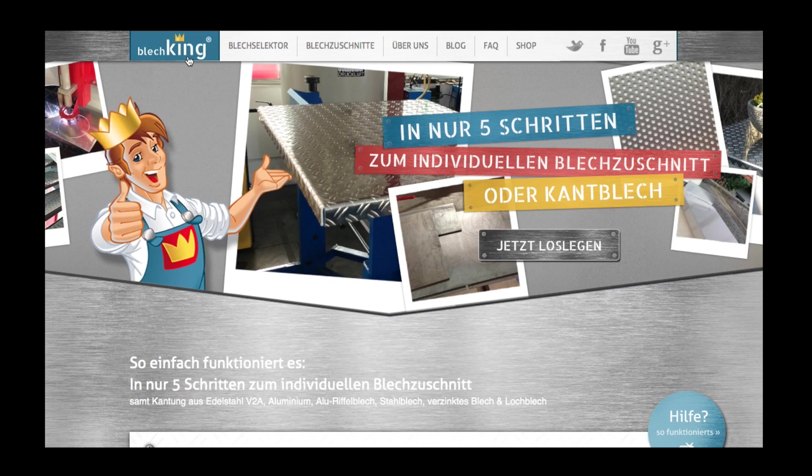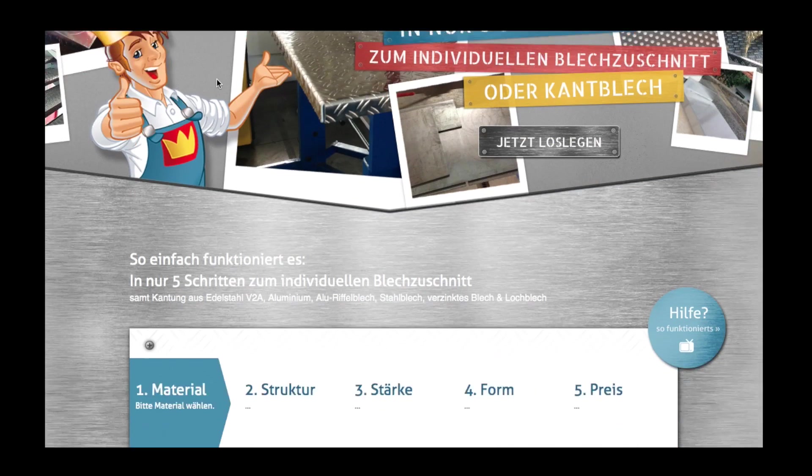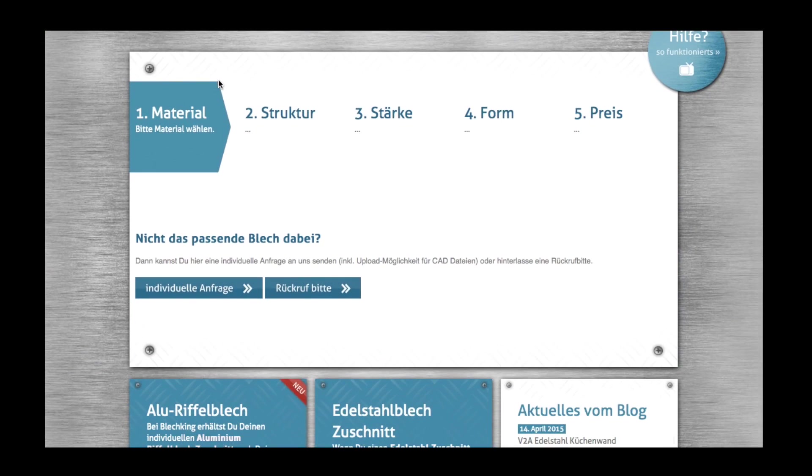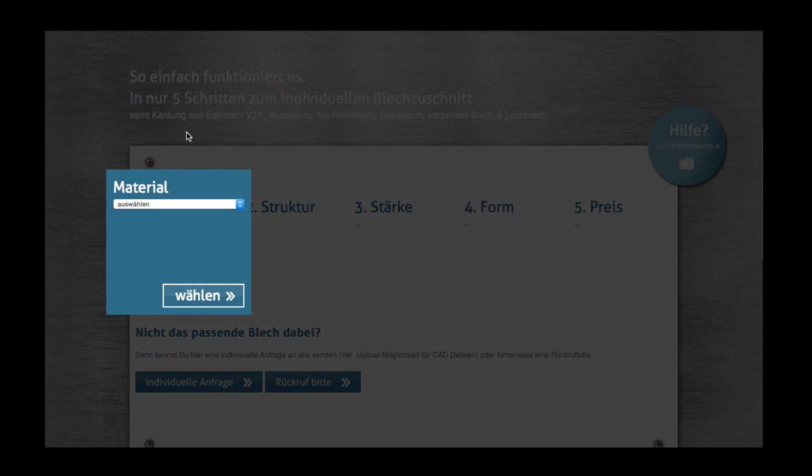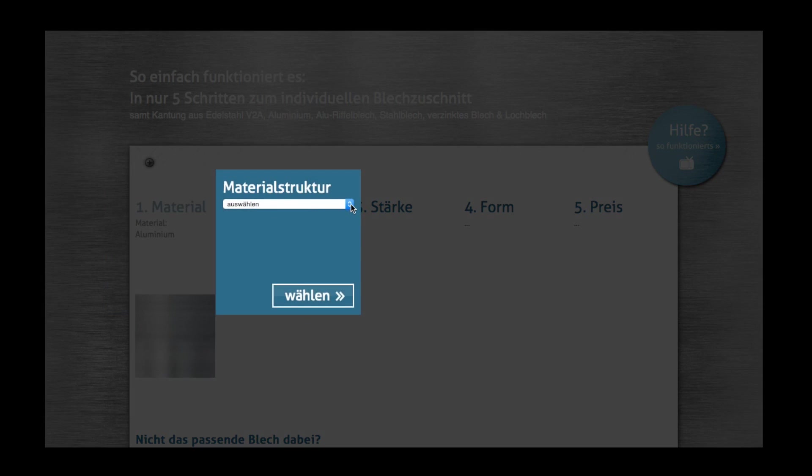We order the disc at Blash King DE. This company is specialized in metal sheet cutting. We choose aluminium as material because it is lightweight. The metal sheet should have a plain surface and not be thicker than 2 mm.